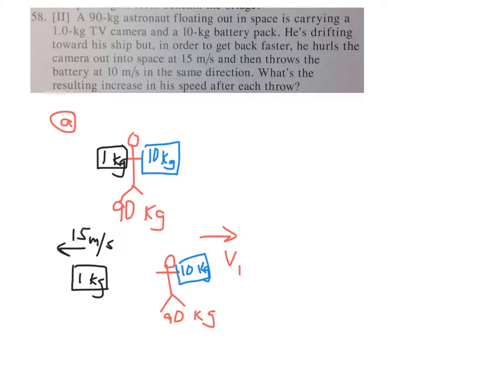The initial momentum is zero before throwing, so after throwing the momentum must also be zero. The camera's momentum backwards is M times V, which is 1 times 15. The backwards momentum is 15 kilograms meters per second, so that must be the momentum of the astronaut forward.